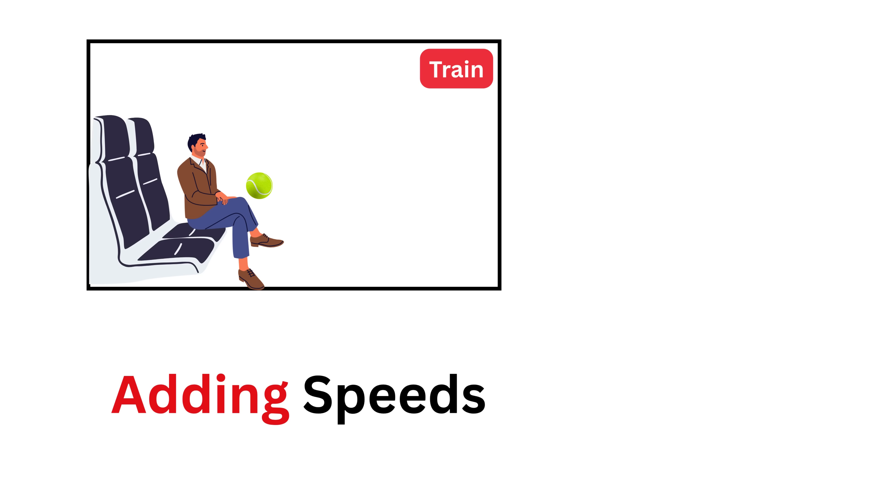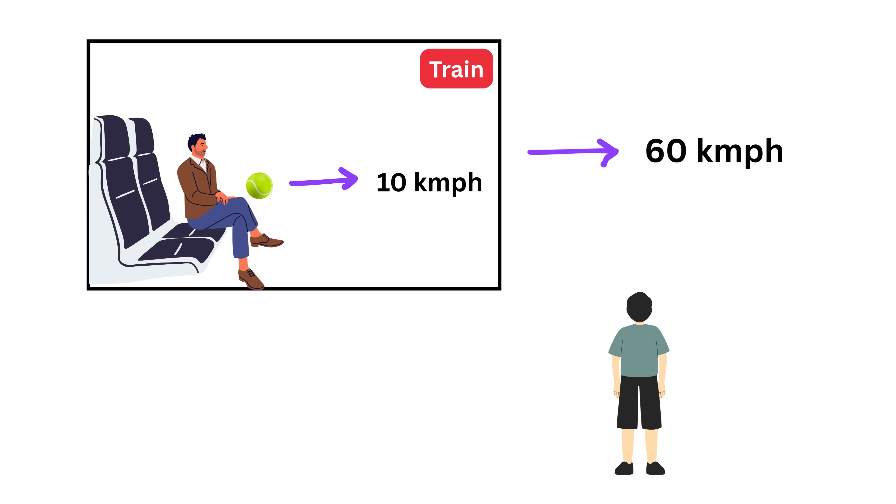Now here's another idea from classical physics, which is adding speeds. Imagine your train is moving at 60 kilometers per hour and you throw a ball forward inside the train at 10 kilometers per hour. Someone standing outside on the ground would see the ball moving at 70 kilometers per hour. That is just 60 plus 10. So in classical physics, we simply add the speeds, or subtract in case it is going in the opposite direction.